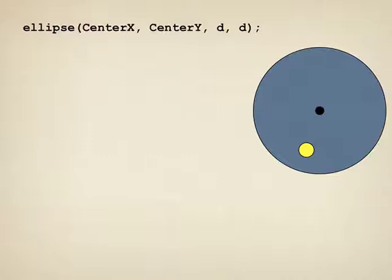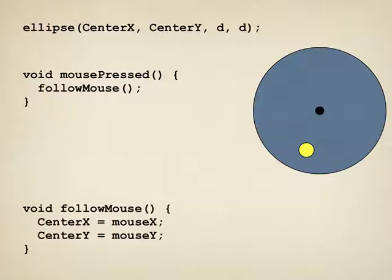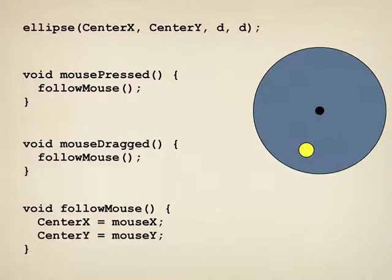A good place to start as always is with mouse pressed. So let's write that, and I'll make it very simple. It calls another routine called follow mouse, and all that follow mouse does is it sets the current mouse X and Y to the ellipse's center X and center Y. The advantage of doing it this way is that I can now write mouse dragged, and it's very simple.